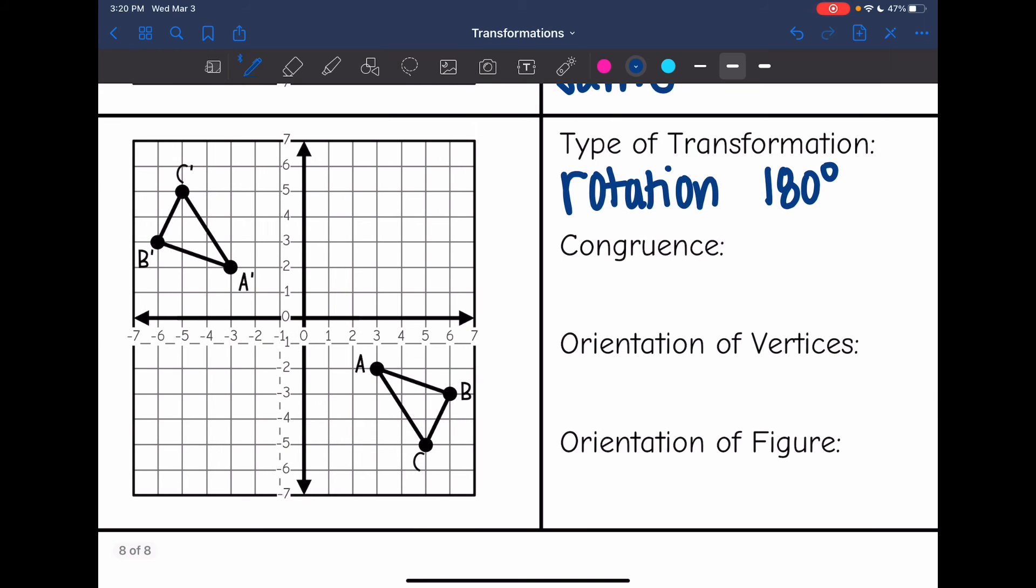Our congruence stayed the same. We do not change sizes at all. And then the orientation of the vertices, let's follow it clockwise. I go A, B, C. A, B, C. So in a rotation, the orientation of the vertices stays the same. But the orientation of the figure, the way it is facing, changes.